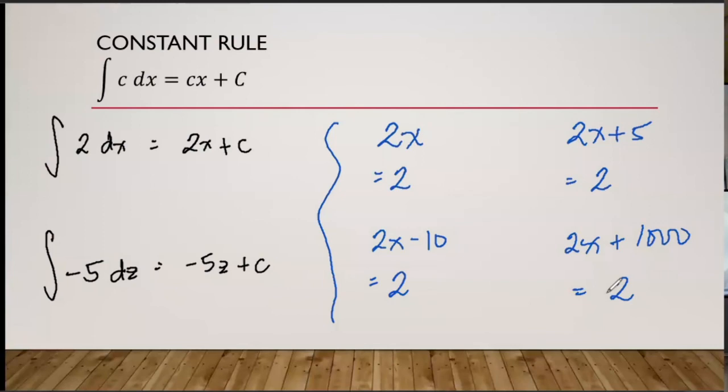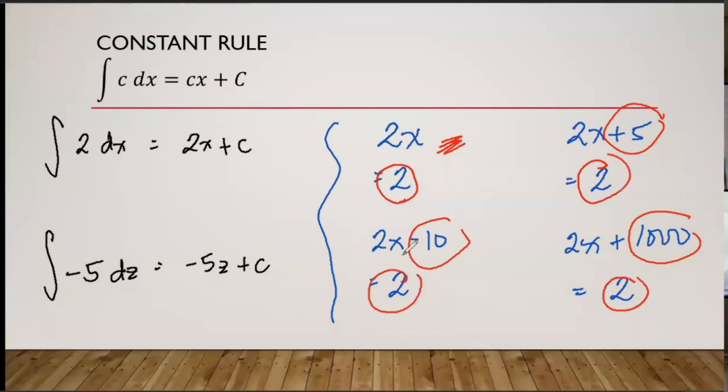So if you will look at it, whatever the constant is, or even if you didn't put any constant, the derivative is still 2. That's why, to be able to capture all of those possible constants, we just put plus c. Kasi we never know, may constant ba siya o wala? Kung mayroon siya, ano yung constant na yun? At dahil hindi tayo sigurado, we just put a variable. Plus c.